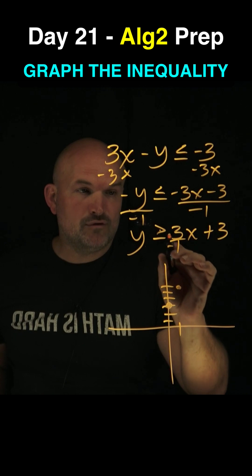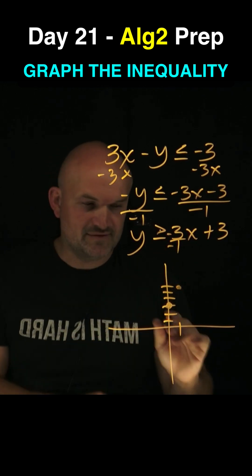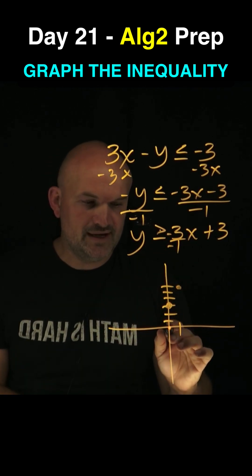You could also do a negative over a negative, right? Because negative over negative is also positive. So you could go down 3, 1, 2, 3, and then to the left one.